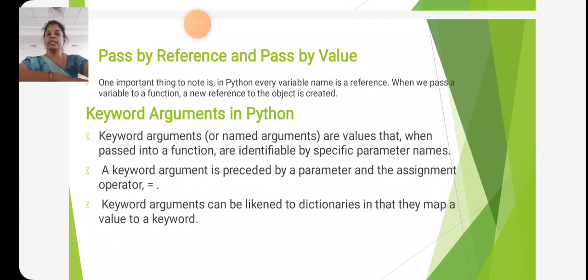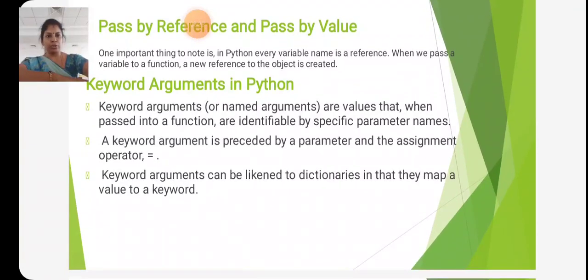Then keyword argument in Python. The keyword arguments are values that when passed into a function are identifiable by specific parameter names. A keyword argument is preceded by a parameter and the assignment operator equal to symbol. A keyword argument can be likened to dictionaries in that they map a value to a keyword.